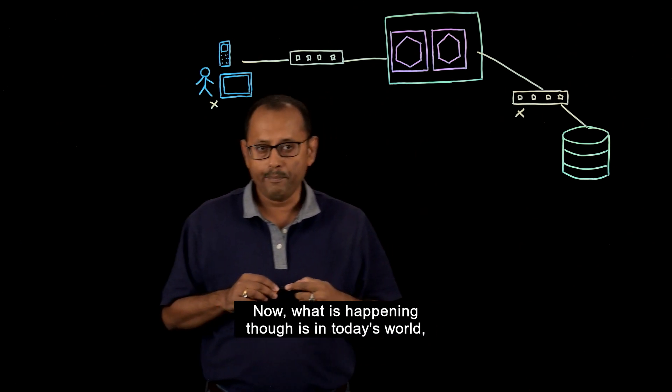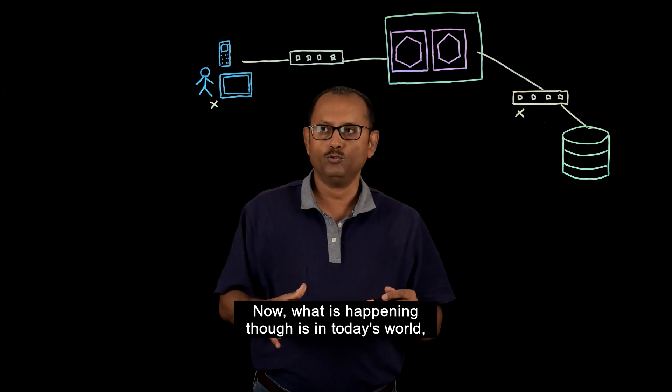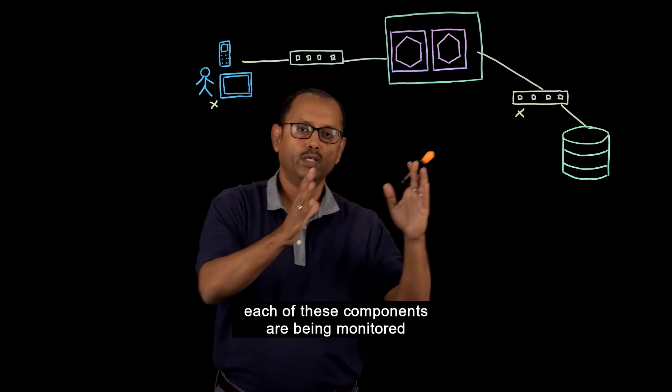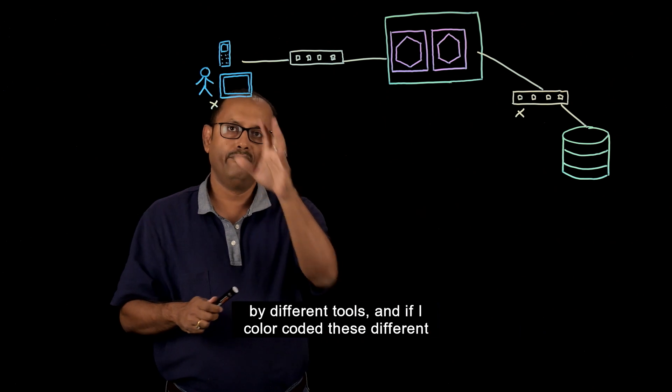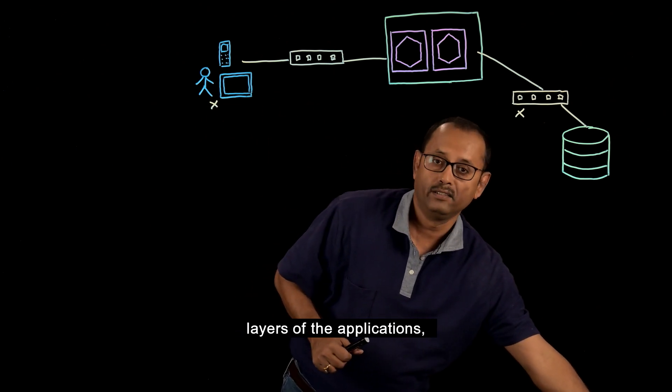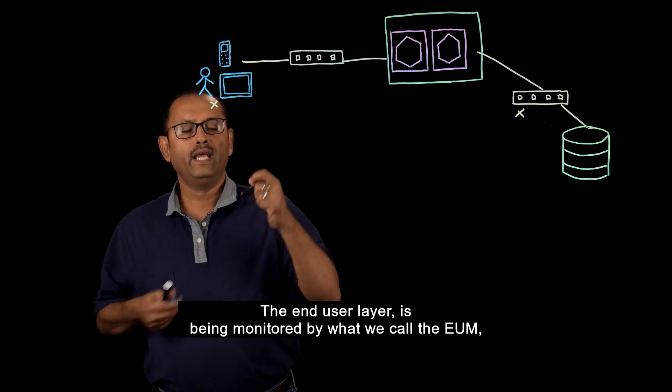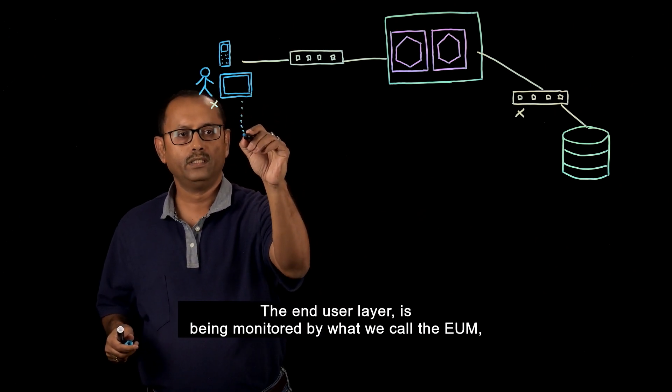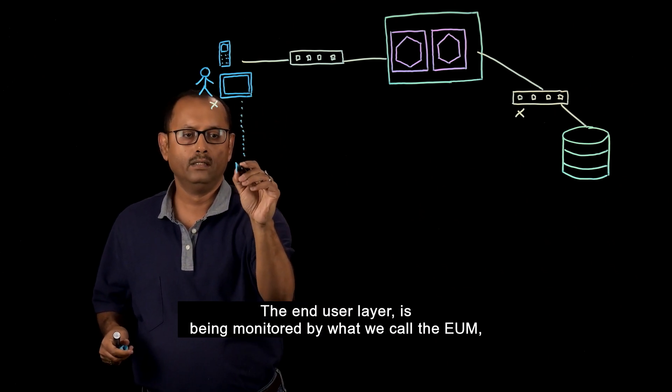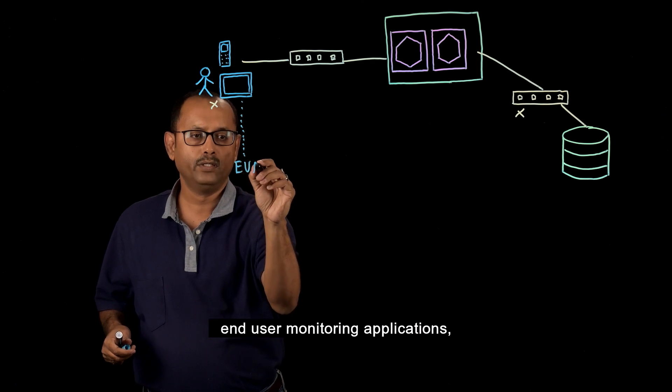Now what is happening, though, is in today's world, each of these components are being monitored by different tools. And if I color coded these different layers of the applications, let me show you what's happening. The end user layer is being monitored by what we call the UM, End User Monitoring Applications.